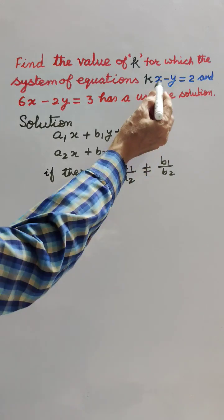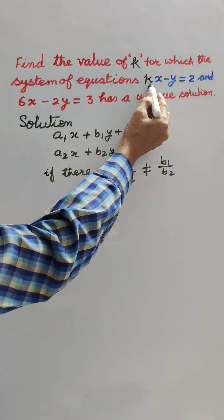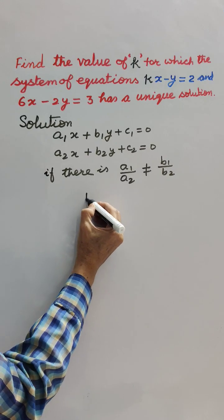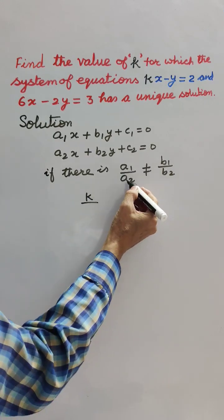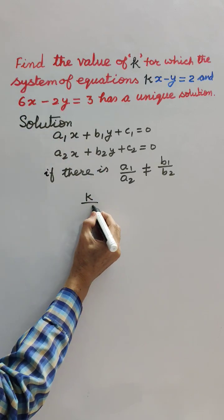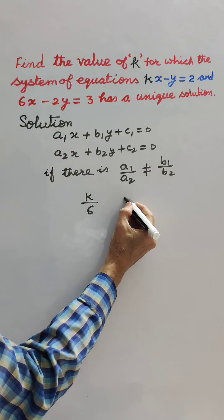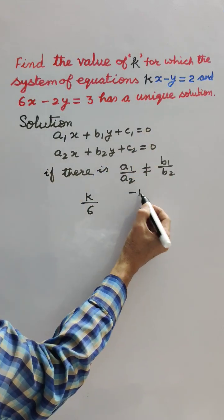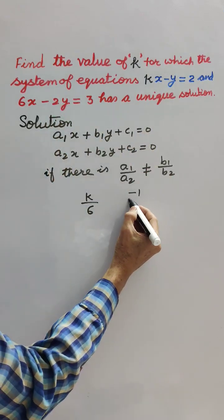In the given pair of equations, in place of a1 we can write k, so testing k upon a2, a2 is here 6, k upon 6, check whether it is equal to minus 1, minus 1 upon minus 2.